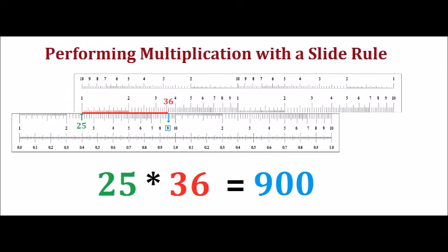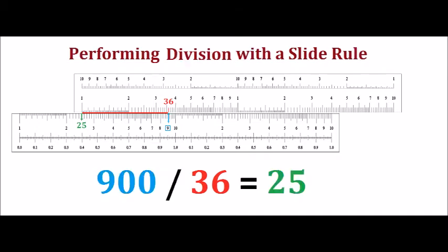It is easy to lose track of the decimal place, then your answer could be wrong by a factor of 10, 100, 1000, or even more. How about division? This works the same but in the opposite direction.